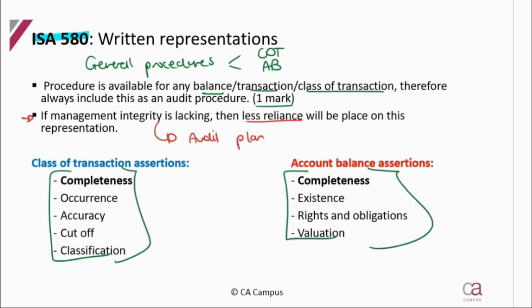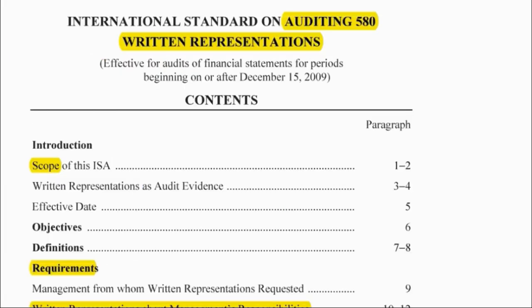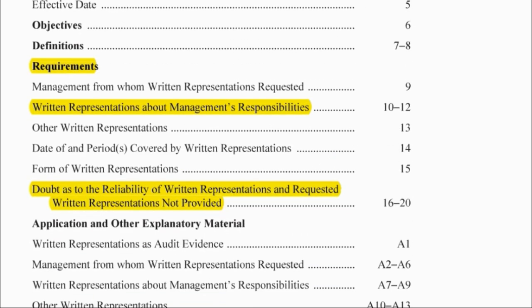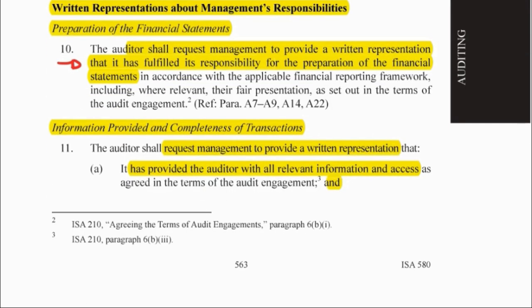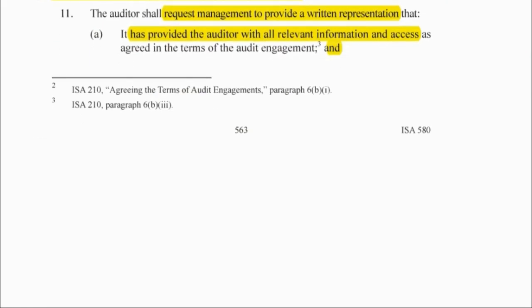I just want to take you to the standard quickly so that you can see what's in it, but we're not going to go into the detail because it's literally just one procedure. Here we are — ISA 580 written representations. Something I've highlighted is that there's doubt as to reliability. In terms of our requirements, we need to request written representations from management. One that we must definitely get is confirmation that they've fulfilled their responsibility for the preparation of the financials, and then also for completeness of transactions or for any other assertion we can get a written representation from them.